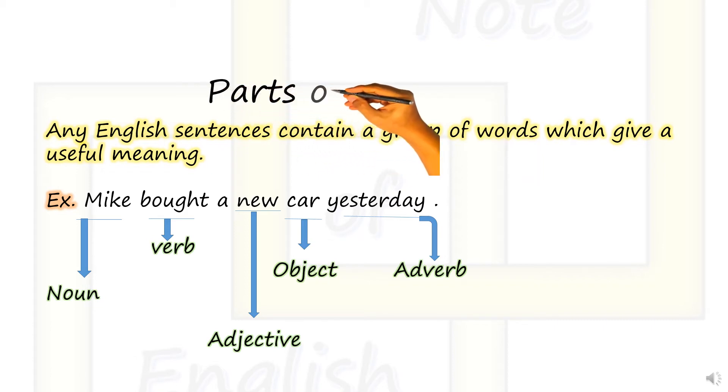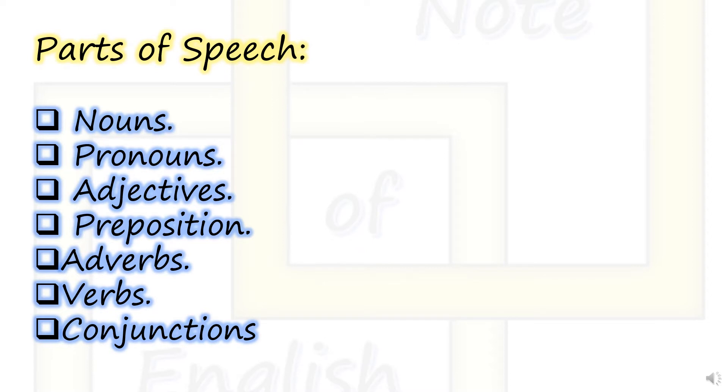Parts of speech. Any English sentence contains a group of words which give a useful meaning. Example: Mike bought a new car yesterday. Mike is a noun, bought is a verb, new is an adjective, car is the object, and yesterday is an adverb. Parts of speech include nouns, pronouns, adjectives, prepositions, adverbs, verbs, and conjunctions.